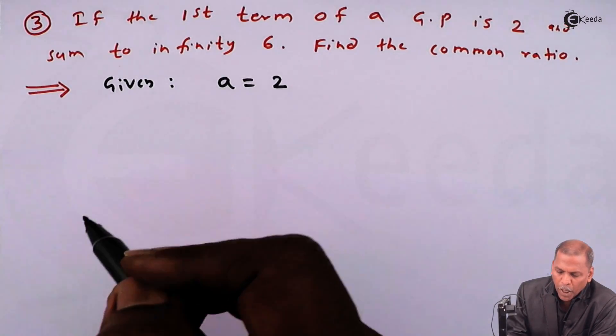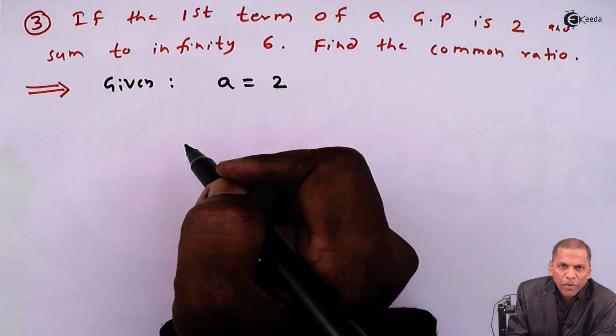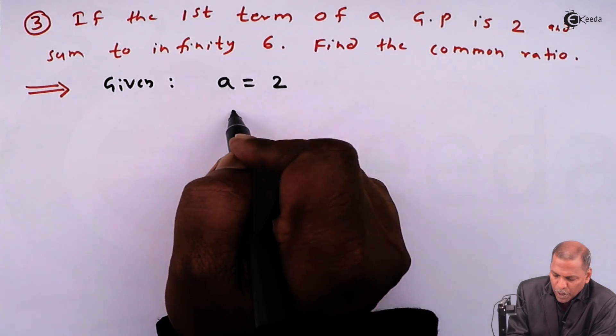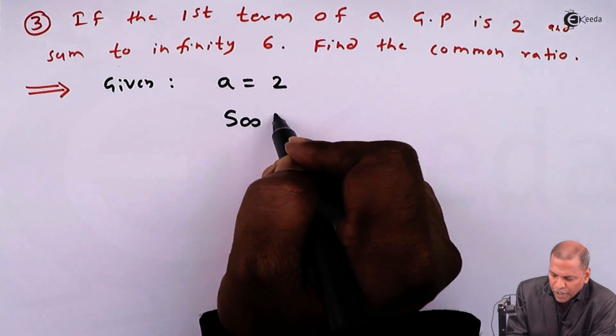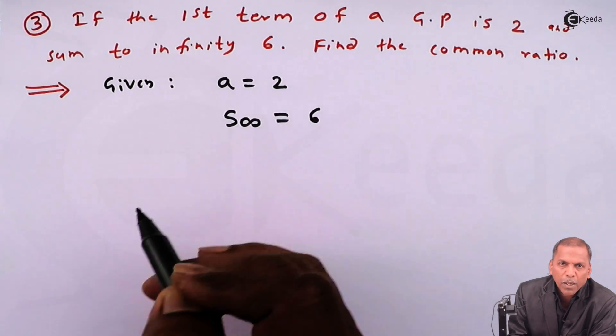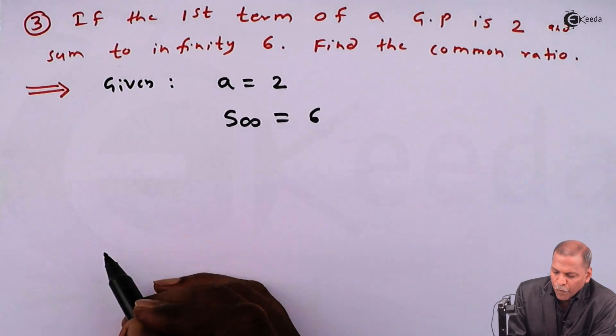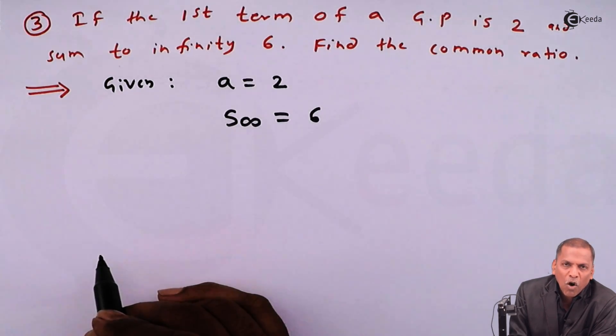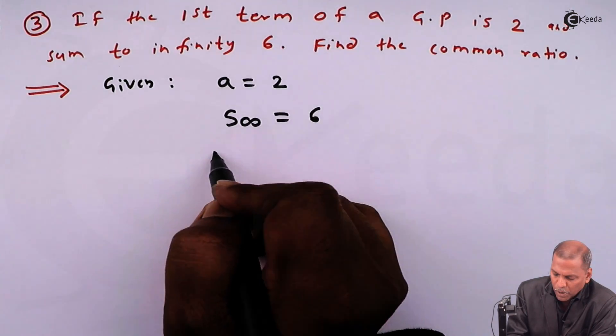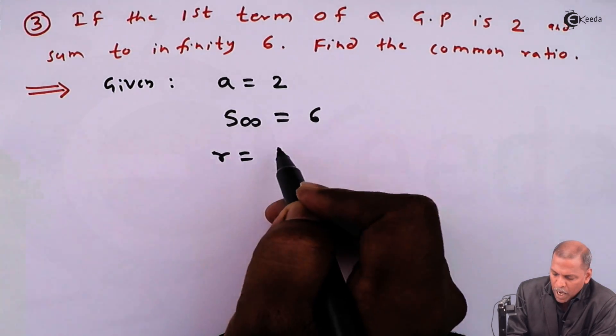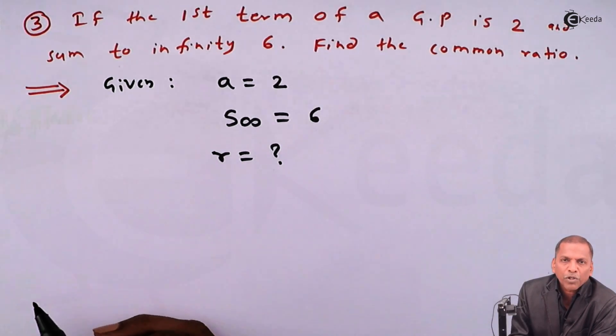At the same time, sum to infinity also given as six, it means S infinity is equal to six. And from this given information, we have to find the common ratio, it means r is equal to question mark.